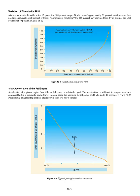Jet engines operate most efficiently in the 85% to 100% RPM range. At idle RPM of approximately 55% to 60%, they produce a relatively small amount of thrust. An increase in RPM from 90% to 100% may increase thrust by as much as the total thrust available at 70%. Acceleration from idle to full power in a piston engine is relatively rapid, but jet engine acceleration is usually much slower — in some cases taking up to 10 seconds to reach full power. Pilots should anticipate the need for adding power from low power settings.